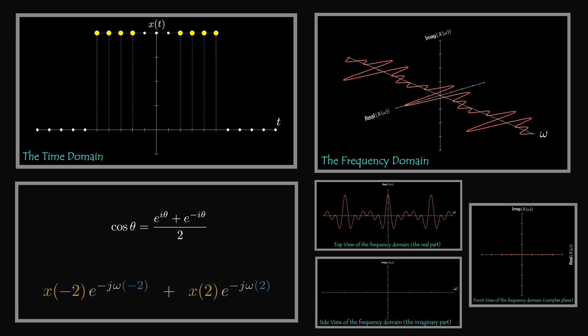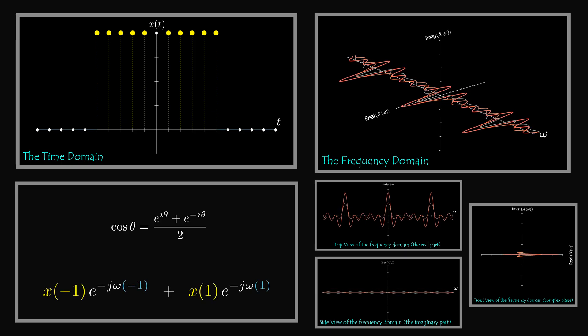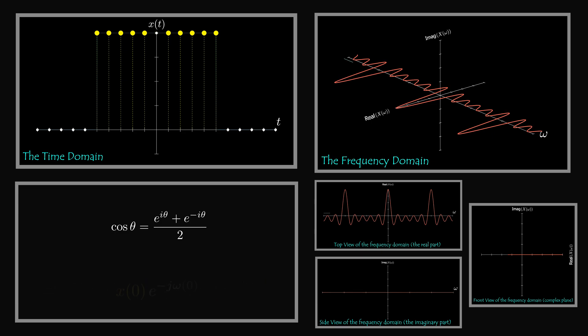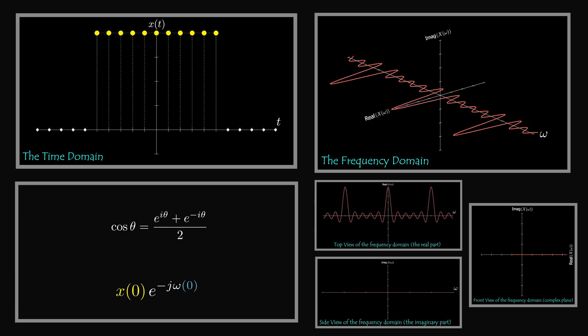So a discrete time domain signal is periodic in the frequency domain, and a discrete frequency domain signal is periodic in the time domain. In the next video, we will discuss the inverse discrete time Fourier transform.